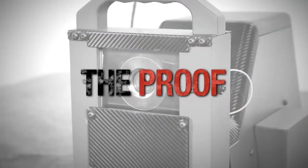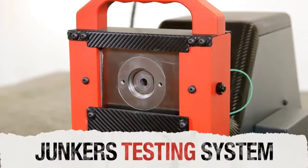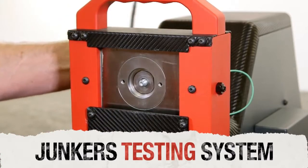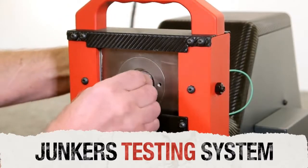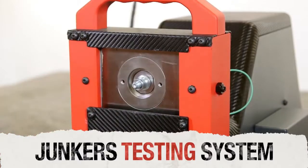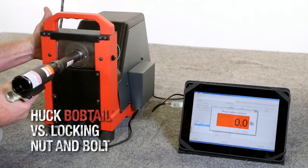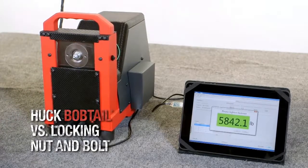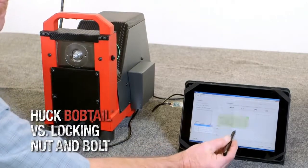To prove it, we put huck to the test. The Yonkers testing system was employed to compare the vibration resistance of huck two-piece fasteners with both conventional and locking nuts and bolts. This system was developed specifically to test the clamp strength of fasteners under intense transverse vibration.